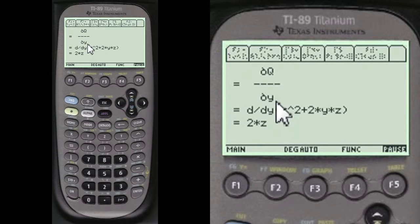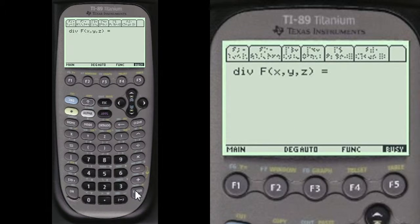Partial of Q with respect to y turns out to be 2z. Partial of R with respect to z turns out to be zero. So the answer is 2z.